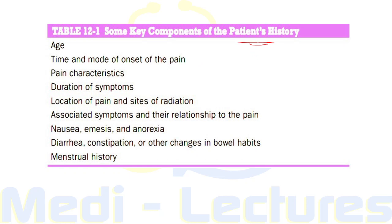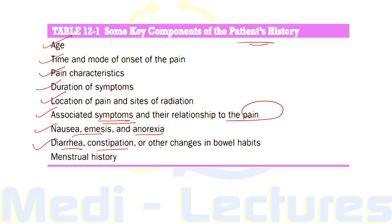Key points to include in the patient's history: age, time and mode of onset of pain, characteristics of pain, duration of symptoms, location and sites of radiation, associated symptoms and their relationship to the pain, presence of nausea and anorexia, associated diarrhea, constipation or other changes in bowel habits, and menstrual history, which is very important in females.